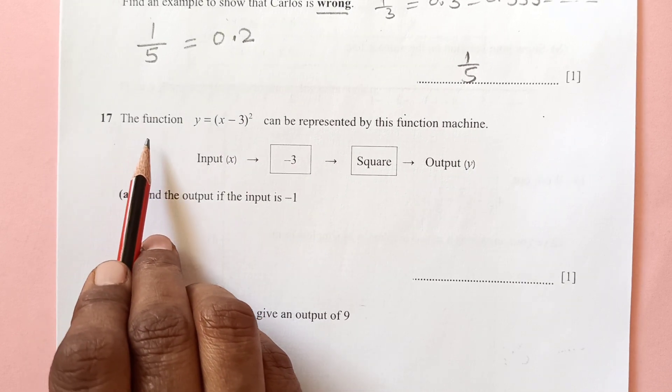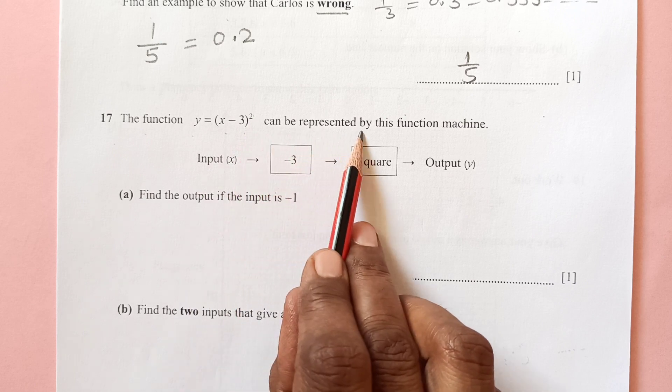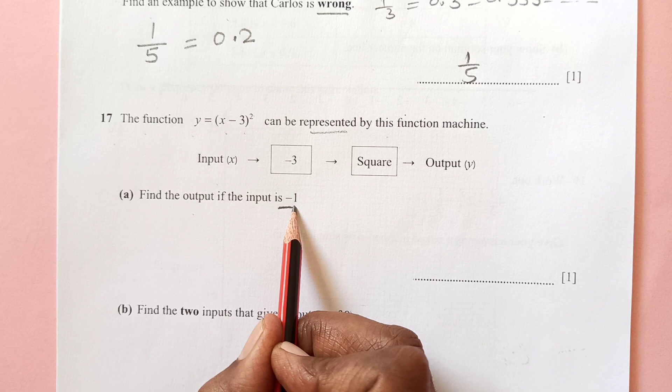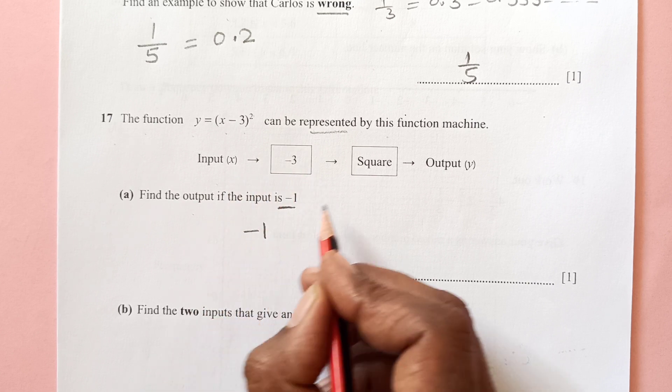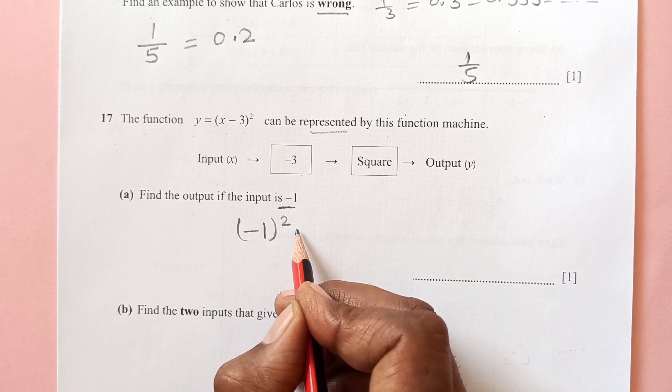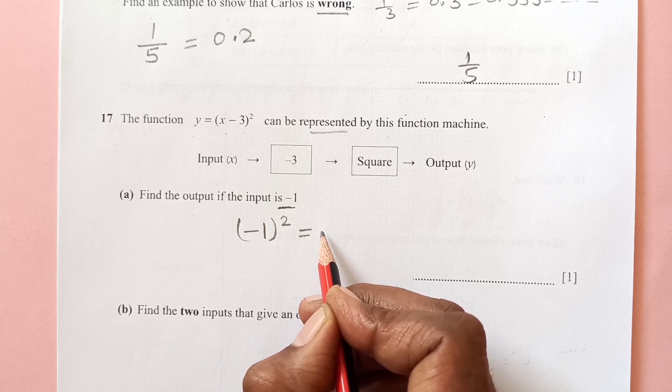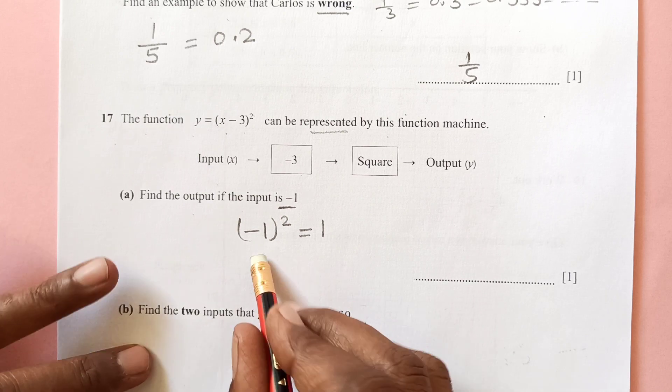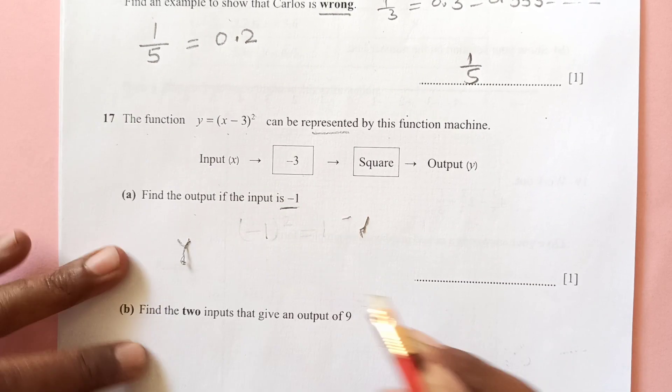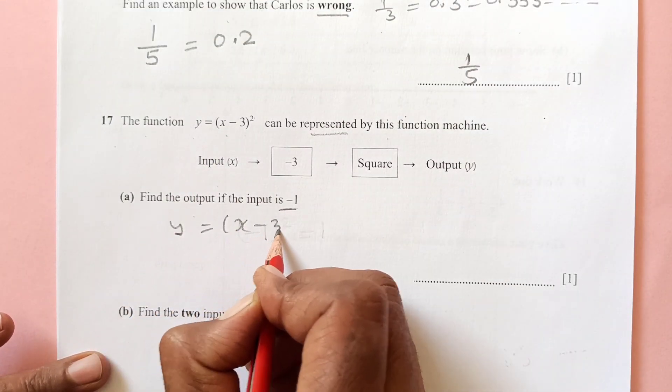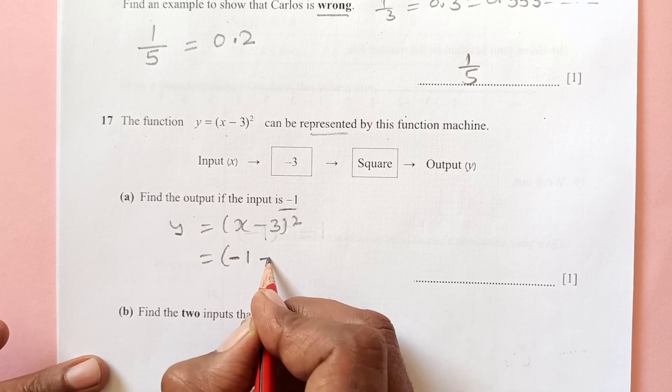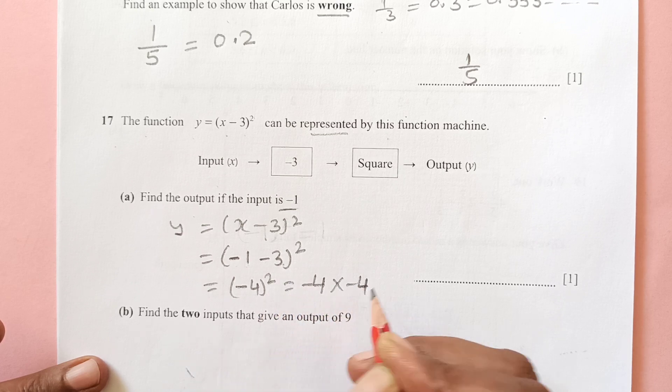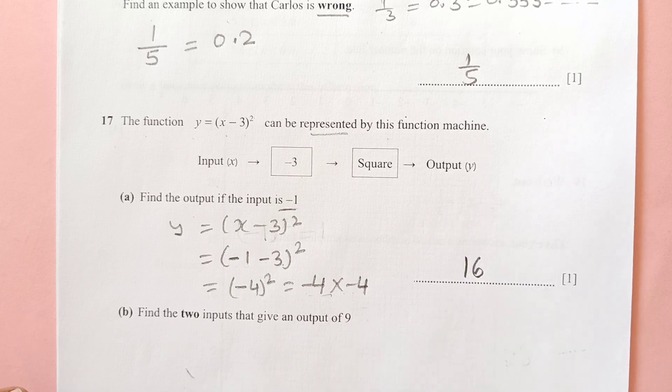Number 17: The function y equals x minus 3 squared can be represented by this function machine: input minus 3, then square, then output. Find the output if the input is negative 1. We have the function y equals x minus 3 power 2. The input is negative 1, so we replace x by negative 1 minus 3 power 2. So negative 1 minus 3 is negative 4, and squared of this meaning negative 4 times negative 4. Negative 4 times negative 4 is positive, so the final answer is 16.